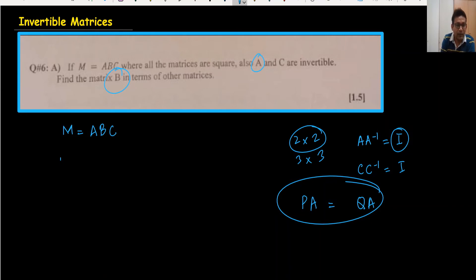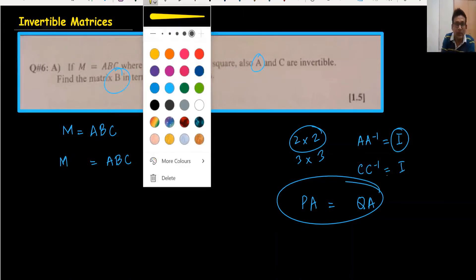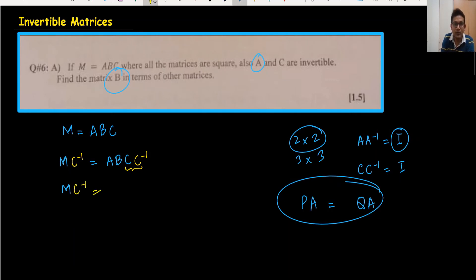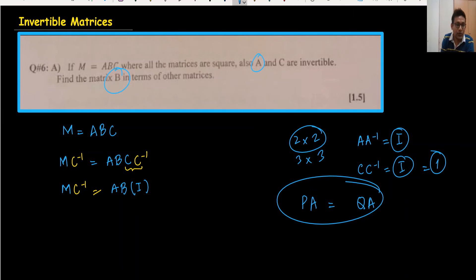Now let's start. Since C times C⁻¹ equals I, I can multiply both sides by C⁻¹ on the right-hand side. So I write C⁻¹ on the right of both sides. The result of C times C⁻¹ on the right is I, and since I multiplied by any matrix equals itself, that part simplifies. So the equation becomes: M times C⁻¹ equals A times B.